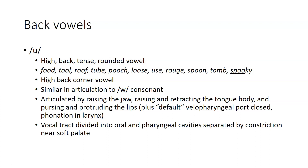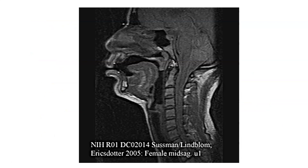When you look at this vowel, you get the vocal tract roughly divided into oral and pharyngeal cavities, separated by the constriction created by tongue backing and raising near the soft palate. Here's an MRI image that shows that constriction in the region of the soft palate, plus the relatively open oral and pharyngeal cavities, along with the pursing and protruding of the lips.